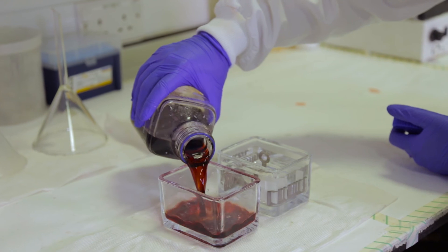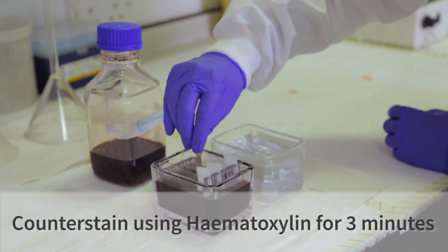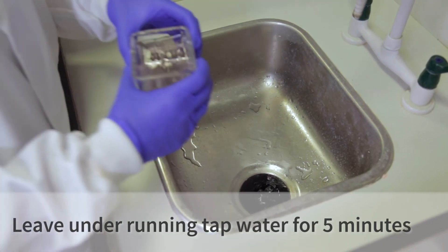For the counter stain, we use haematoxylin. The slides are stained in haematoxylin for three minutes. Next, they are placed in water. They are then kept under running tap water for five minutes.